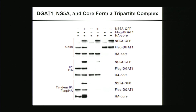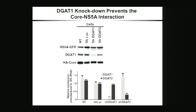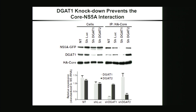Furthermore, by doing a sequential immunoprecipitation of DGAT1 and core, we found that NS5A co-immunoprecipitated with this complex, indicating that the three proteins form a tripartite complex in the cell. These results suggest that DGAT1 might actually act as a physical connector between the viral proteins. To clearly prove this, we looked at the interaction between NS5A and core following DGAT1 knockdown—confirmed by western blot—or DGAT2 knockdown as a control—confirmed by qPCR. We find that knockdown of DGAT1 strongly inhibits the interaction between the two viral factors NS5A and core. So DGAT1 seems to be required for the interaction between NS5A and core.